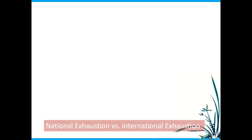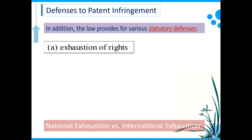In addition to those possible defenses raised in patent litigation cases by the defendants, there is another group of defenses that might be available to defendants. These are defined under the patent law explicitly to limit the scope of the exclusive rights granted to the patent owner. These defenses are called statutory defenses, which could be interpreted as statutory limitations on the exclusive rights granted to the patent owner.